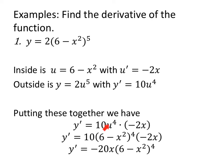If you skip the u substitution and just work directly: derivative of the outside, bring down the 5, multiply by the coefficient 2, leave the inside alone, subtract 1 from the exponent, then multiply by the derivative of the inside. You can see this two different ways to get the same derivative.